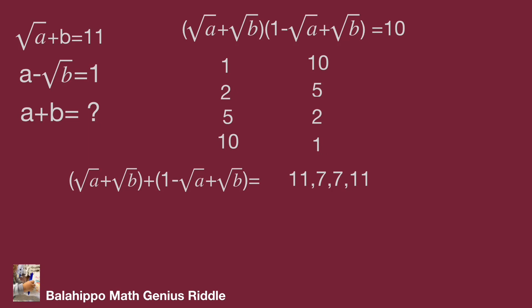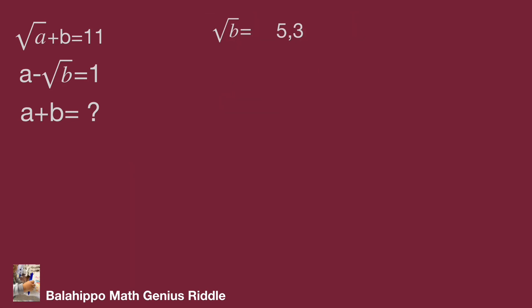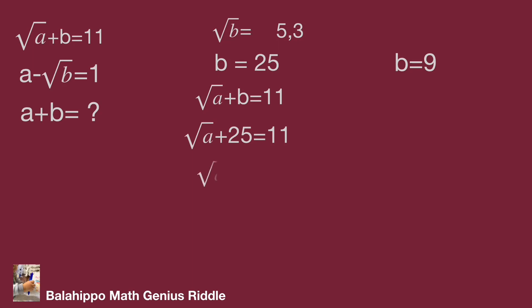Then (√b + 1) equals 11 or 7, so √b equals 5 or 3, meaning b is 25 or b is 9. If b is 25 and √a + b = 11, then √a = −14. Because a and b are positive integers, this is false.